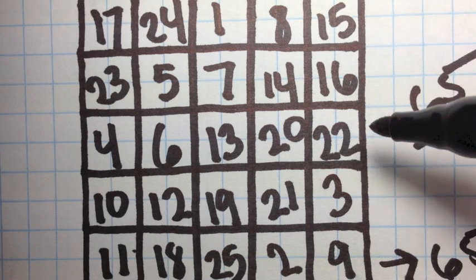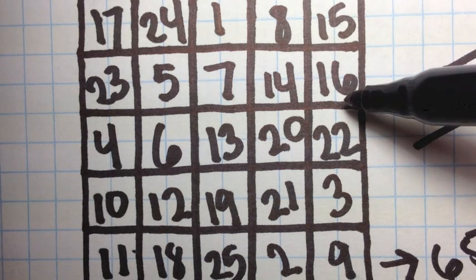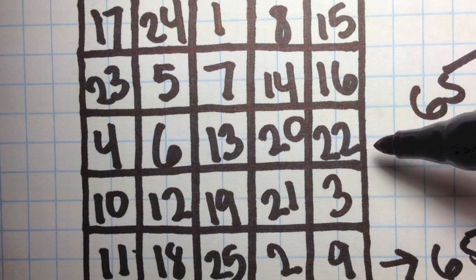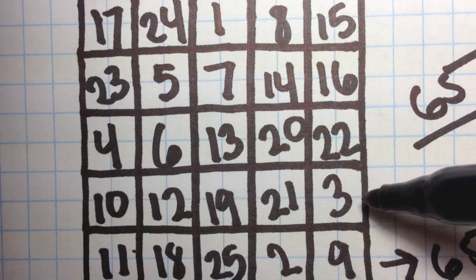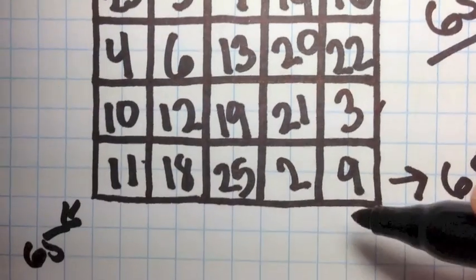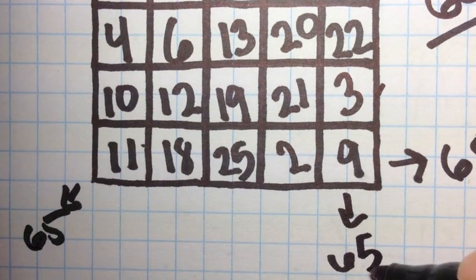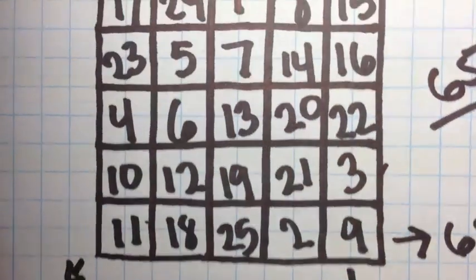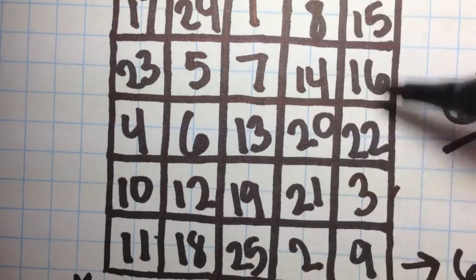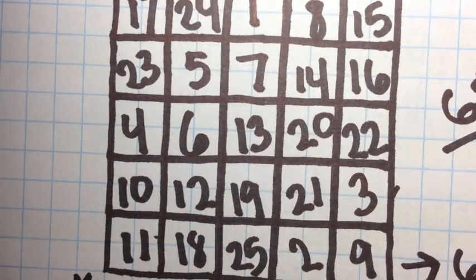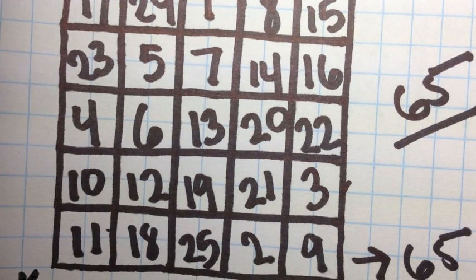Let's try a vertical row. 15 plus 16 equals 31, plus 22 equals 53, plus 3 equals 56, plus 9 equals 65. This would be true for any of the vertical lines, any of the horizontal lines, and all the diagonal lines as well. And that's our 5 by 5 magic square, with a constant of 65.